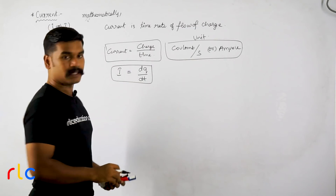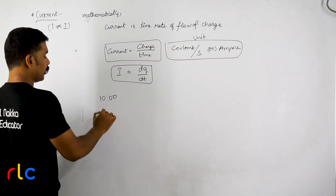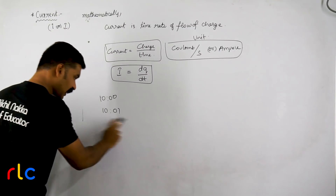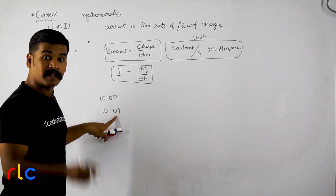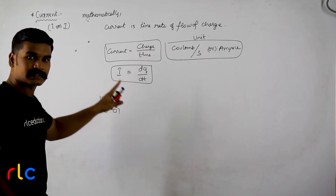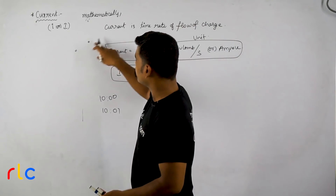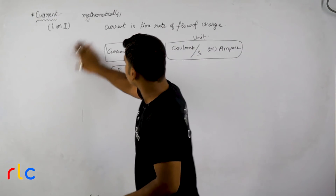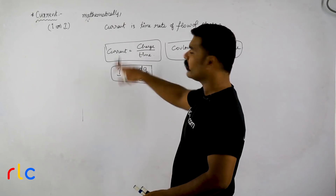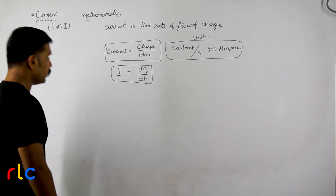The expression dQ/dt means we track how charge changes with respect to time. For example, at one moment a charge is at one position, and a moment later it has moved — by observing this change over time, we track its movement. If charge is changing, current exists in the circuit. If charge does not change, there is no current.